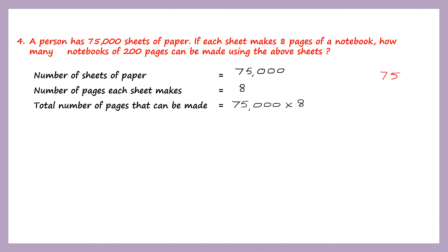Let's do the multiplication: 75,000 into 8. 0, 0, 0, 0 — then 8 fives are 40, carry 4. 8 sevens are 56, plus 4 is 60. So the total number of pages that can be made is 6,00,000 — 6 lakh pages.